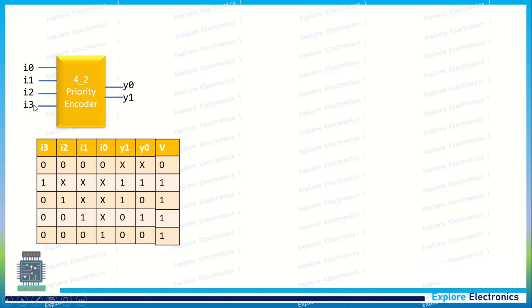It means when there is a value present in i3, irrespective of i0, i1, i2 values, y0, y1 will be encoded to 1, 1. Look at the truth table now. There is a valid signal here. This valid signal indicates the encoding is valid.